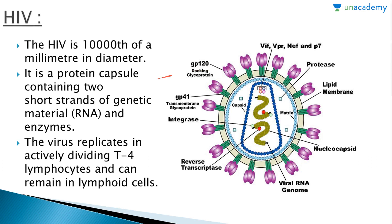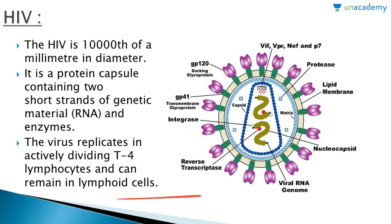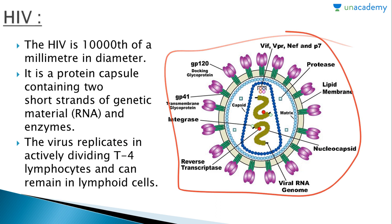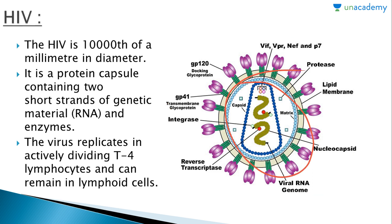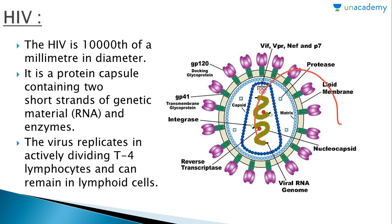HIV is a protein capsule containing two short strands of genetic material — that is RNA — and an enzyme. The virus replicates in the actively dividing T4 lymphocytes and can remain in lymphoid cells. This is the diagram of the HIV virus. It has a capsid, a matrix, a nucleocapsid, and an enzyme called reverse transcriptase, which converts the RNA of the HIV virus into DNA.